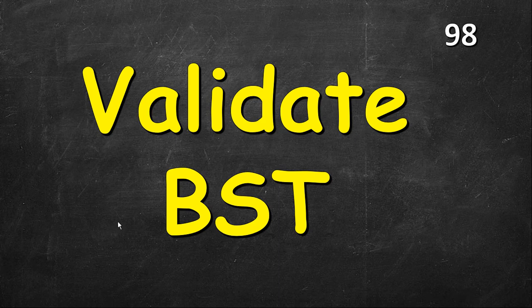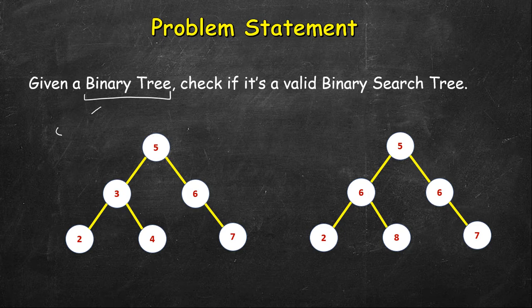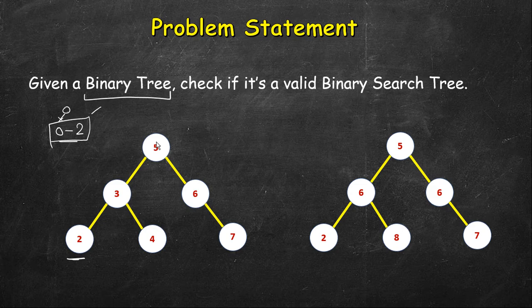In this video we will validate a binary search tree. We are given a binary tree but we don't know whether it is valid or not. A binary tree has a very loose criteria — each node can have between 0 and 2 children. It can be a leaf node with 0 children, or have one or two children.